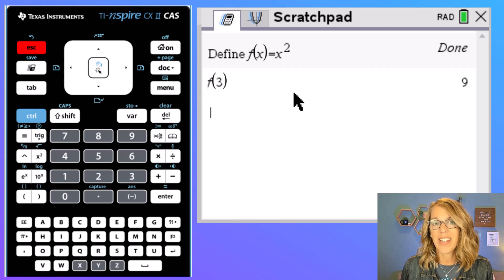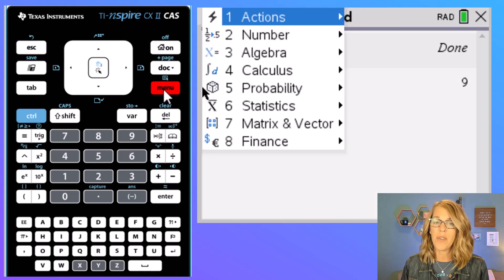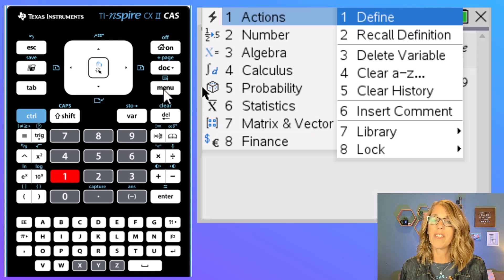Now there's an easier way to get to that define function and that's by going to your menu. I'm going to click on menu. I want to choose actions and you can do that by clicking on it but I'm going to go ahead and just choose number one. It gives me all of my actions and right there at the top is number one.